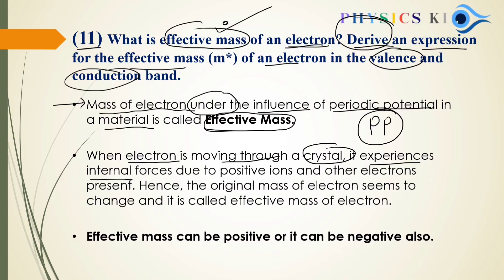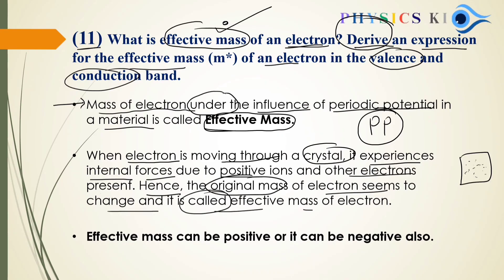The electron experiences internal forces due to positive ions and other electrons. Due to these several internal forces, the original mass of the electron seems to change. That changed mass is called the effective mass of the electron. So effective mass can be positive or negative.